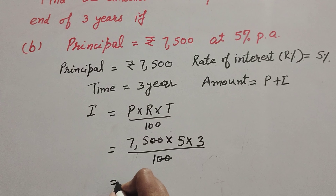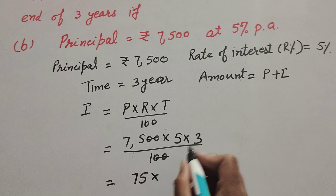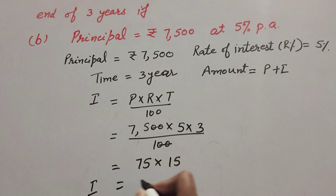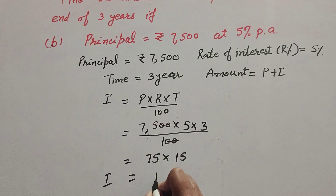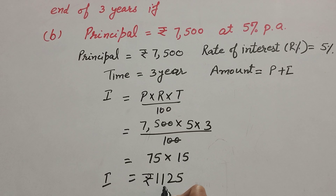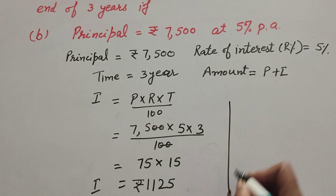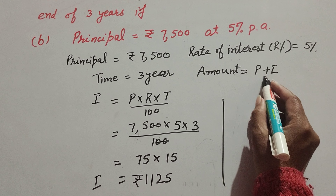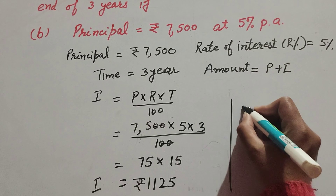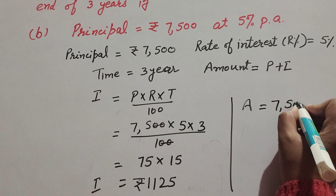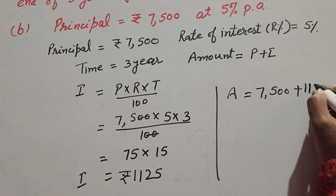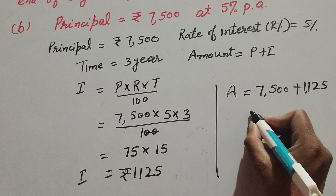The two zeros in the denominator and numerator cancel, giving us 75 × 5 × 3 = 75 × 15 = 1125. So the interest paid at the end of three years is equal to rupees 1125. The amount is equal to principal plus interest.